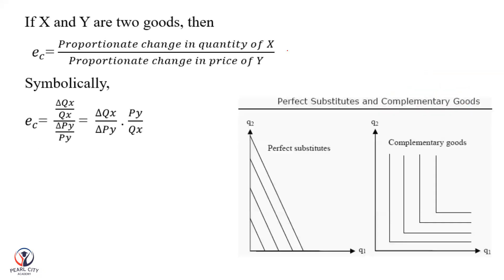Cross-elasticity of demand formula: proportionate change in quantity of Y divided by proportionate change in price of Y. For example, if the price of tea goes up, consumers will go and purchase more coffee. That illustrates the substitute goods relationship.